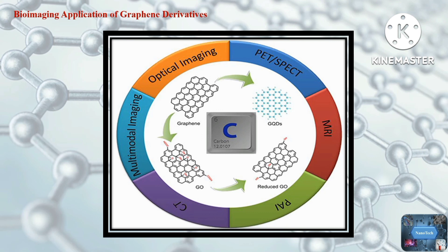Compared to conventional fluorescent probes such as quantum dots, graphene quantum dots possess high stability, excellent biocompatibility, good solubility, and low cytotoxicity. Because of these properties, graphene-based materials can be used for both in vitro and in vivo imaging. Graphene oxide, like quantum dots, also exhibits upconversion photoluminescence, which reduces interference from autofluorescence. Graphene-based nanomaterials have been actively explored for optical imaging, mainly fluorescence imaging and two-photon fluorescence imaging.